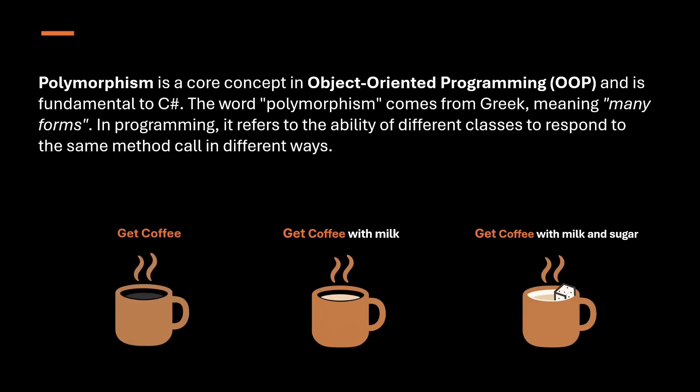Polymorphism is a core concept in object-oriented programming and a fundamental building block in C#. The term comes from a Greek word meaning 'many forms,' and that's exactly what polymorphism enables in programming — for a single method call to take many different forms depending on the context.